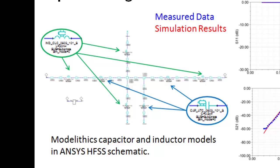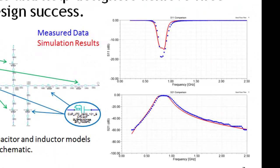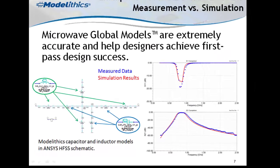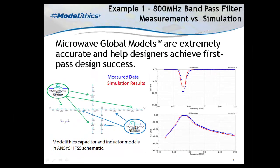The simulation uses microwave global models for all components and the ANSYS HFSS built-in transmission line models. On the right-hand side, notice the excellent simulation-to-measurement agreement achieved. The red traces represent simulation data and the blue circles represent measurement data. For more examples of filters and other circuit designs, see our application notes under the literature section on the Modelethics website.